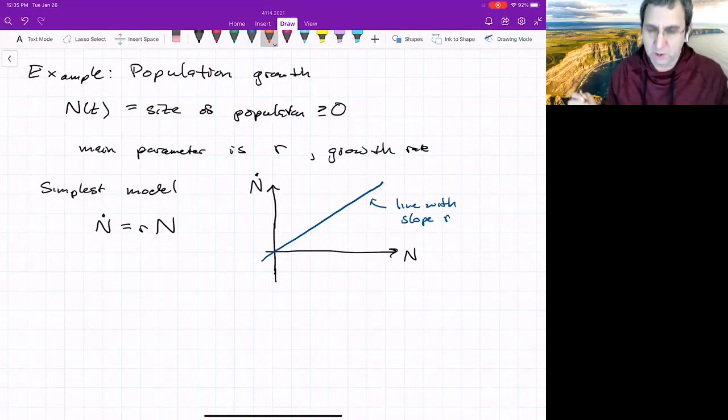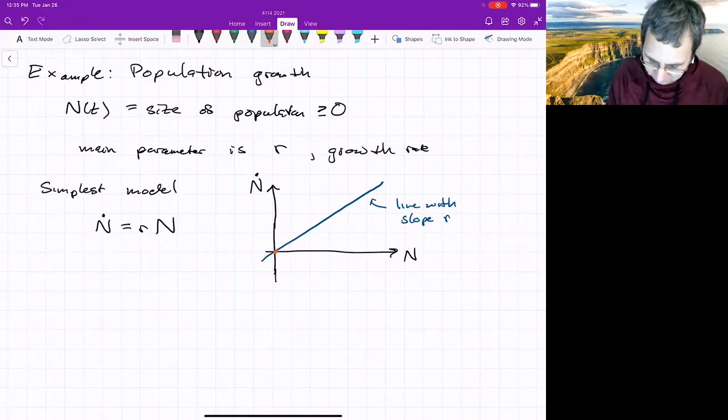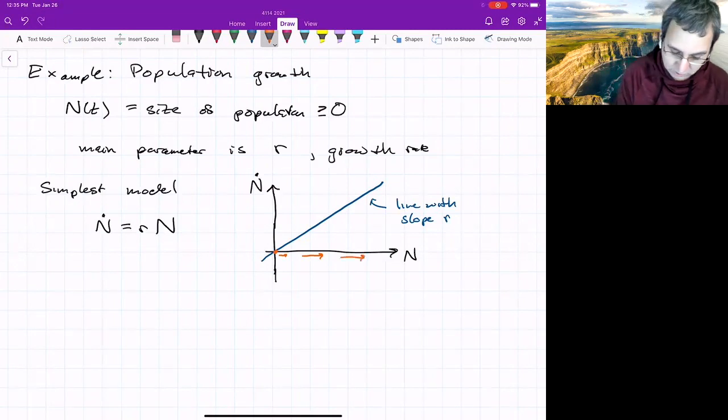So what does this give us? If this is N, and here's N dot, this is how we kind of our graphical way of analyzing these types of systems, we would just have a line. So this is a line with slope R. And what would we get from this if we use our graphical method of analyzing the dynamics? Well, it's runaway population growth.